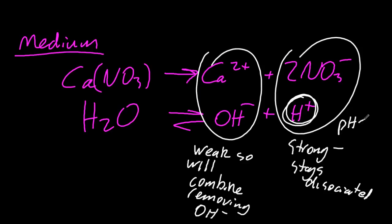So overall, there's more H plus in the solution, and there's less OH minus. That's been removed, stuck onto the calcium ions to make calcium hydroxide, which is reasonably insoluble. It's a weak base.